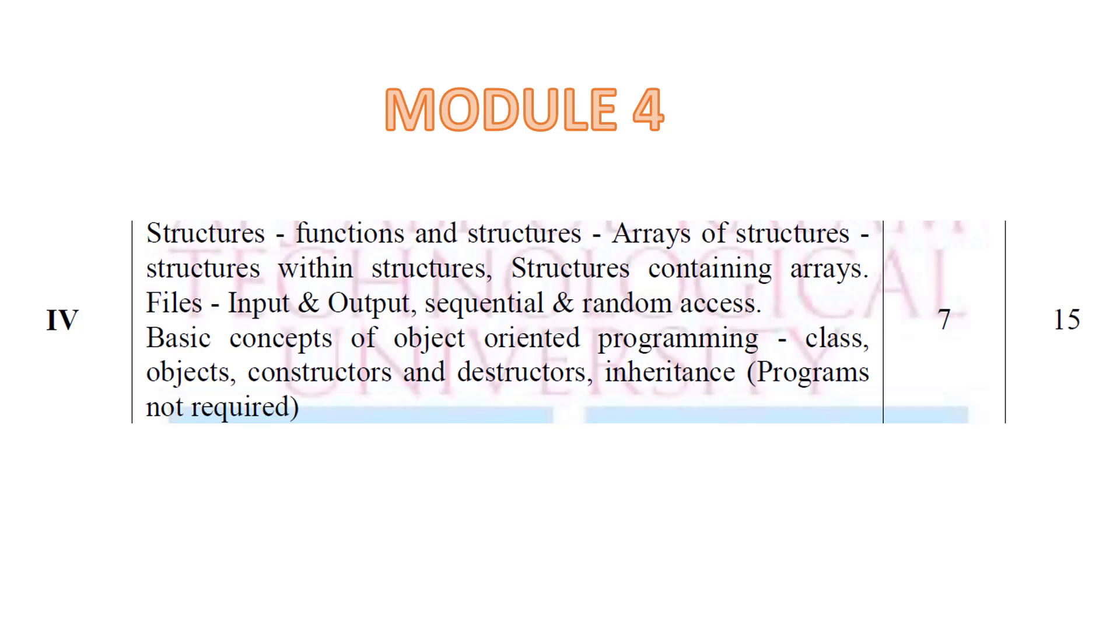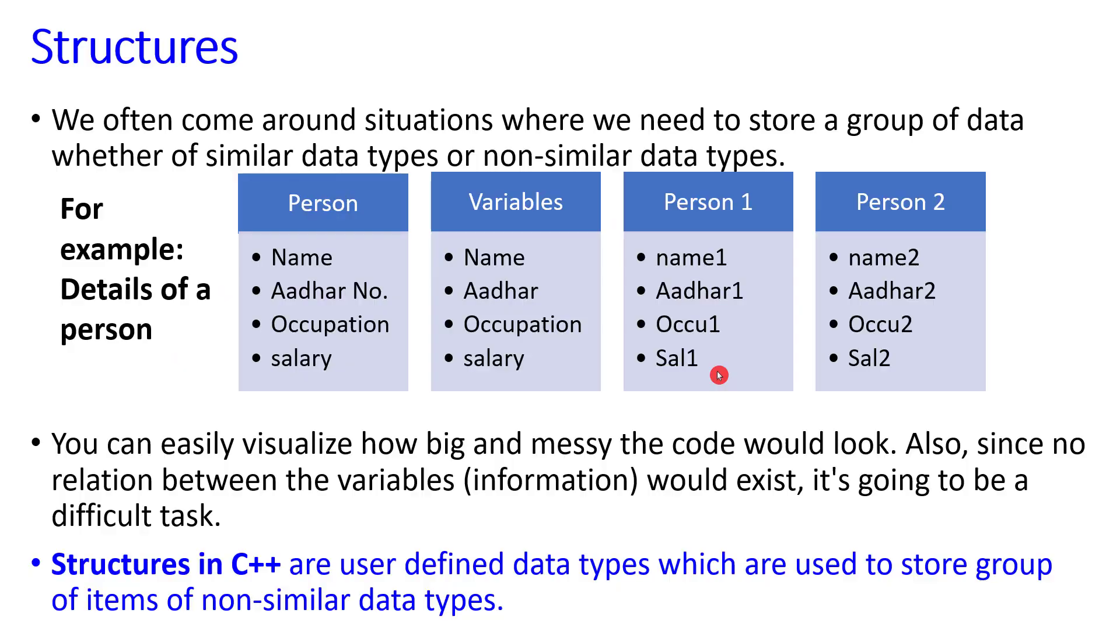Let's start with structures. By definition, we often come around situations where we need to store a group of data, whether similar data types or non-similar data types. Arrays are an arrangement of elements of similar types, but we can't mix items in arrays. Structures provide a well-organized method of storing similar or non-similar data types.